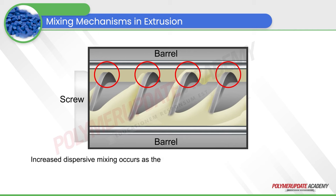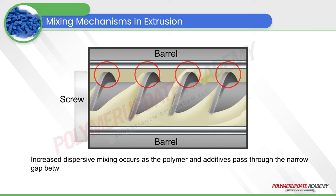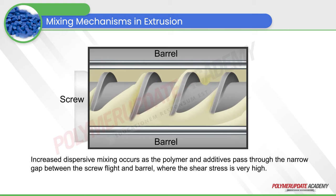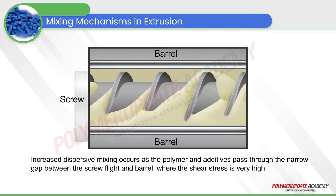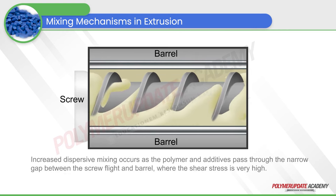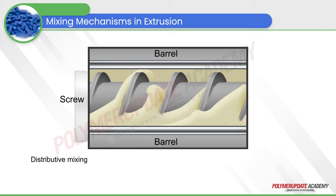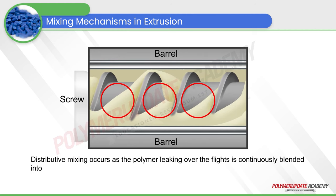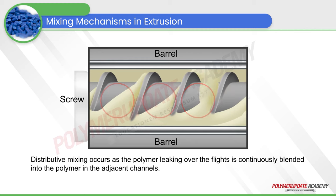Increased dispersive mixing occurs as the polymer and additives pass through the narrow gap between the screw flight and barrel, where the shear stress is very high. Distributive mixing occurs as the polymer leaking over the flights is continuously blended into the polymer in the adjacent channels.